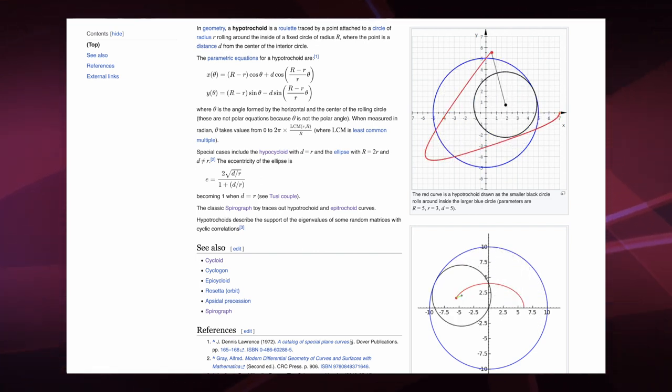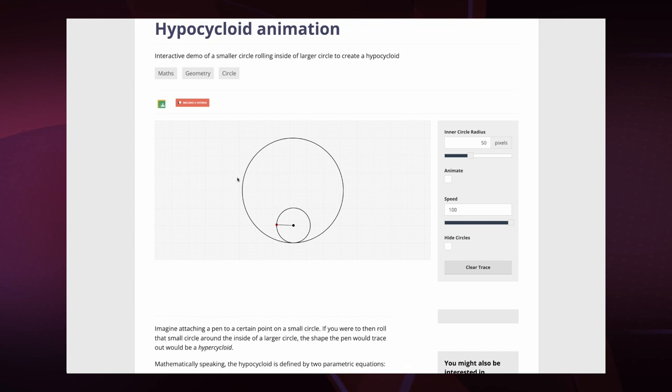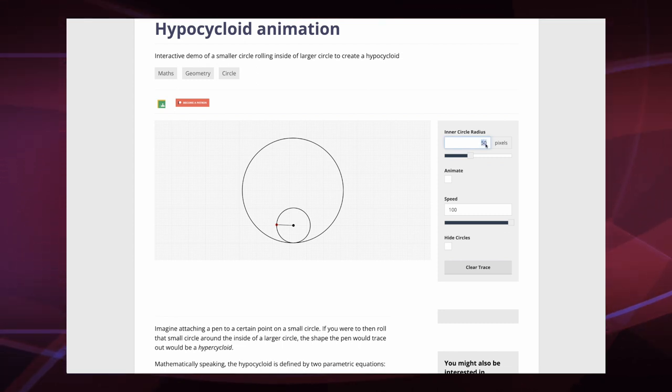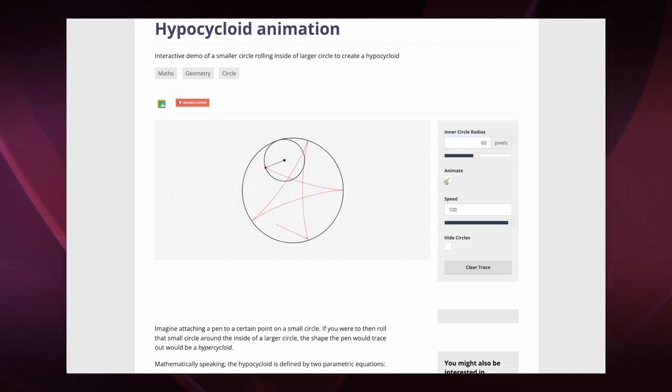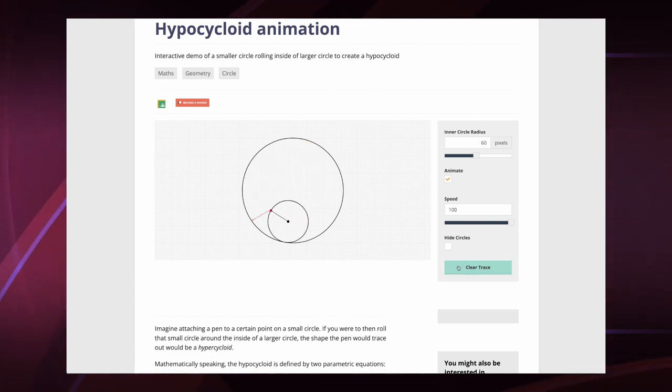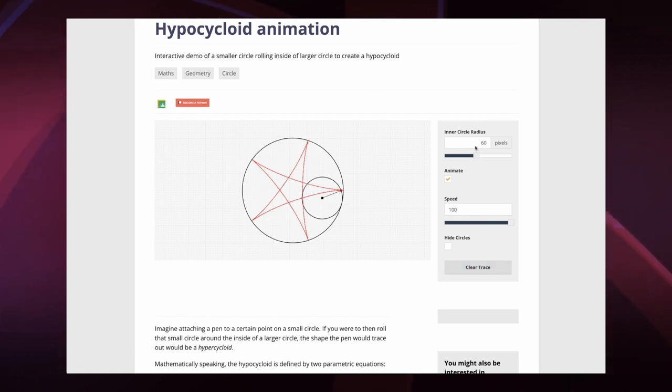We can take a look by animating what's being drawn if we play with the diameter of the inner wheel here. The outer diameter is 150 units or pixels. So let's make this one 60 and we'll get a five-pointed star. It gets in sync after five revolutions of the inner wheel and then it will repeat on its own path forever and ever.